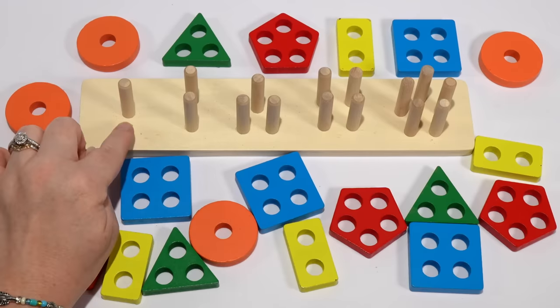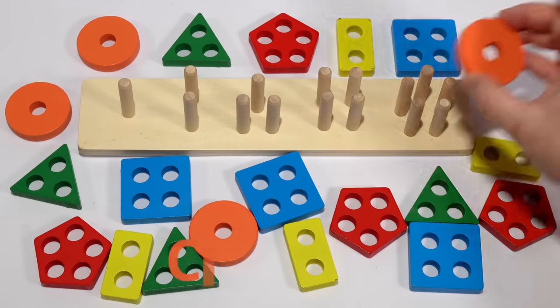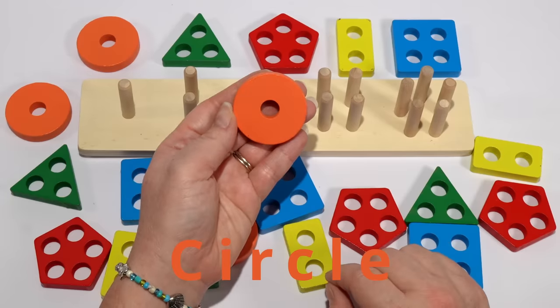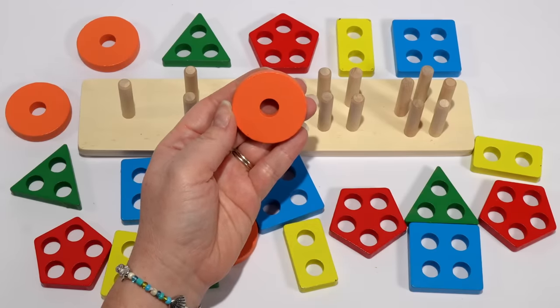So for our first set we have one peg. So we need to find a shape that has one hole. Do you see a shape that has only one hole? That's right, our circle. Our circle has only one hole and the circle is orange.